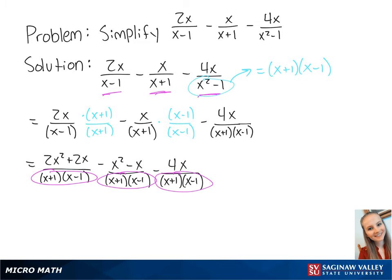Now we have a common denominator, so we can combine all the fractions. This is going to give us 2x squared plus 2x minus x squared plus x minus 4x all over x plus 1 times x minus 1.